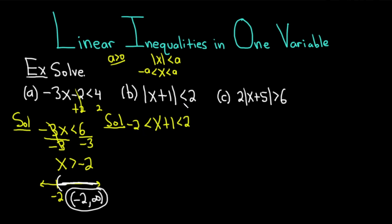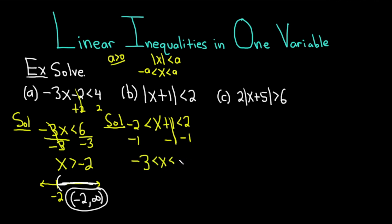One way to memorize it is: whenever you have a less than, you just put less than on both sides, keep this one and flip the sign. Now we can solve this pretty easily — simply subtract 1 from all three sides. We get negative 3 is less than x is less than 1, since 2 minus 1 is 1.